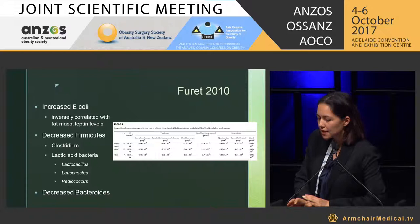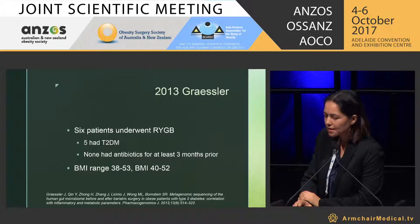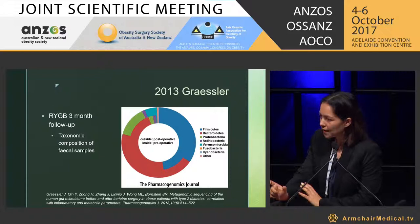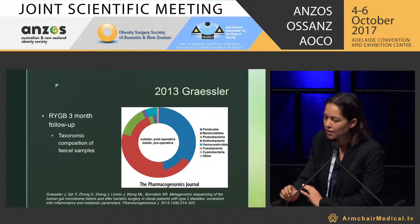In 2013, Dr. Graesler looked at six patients who underwent Roux-en-Y gastric bypass. The inside circle of the chart is the preoperative bacterial abundance and the outside circle is postoperative. Again, we had this mirroring in the changes for firmicutes, Bacteroides, and proteobacteria. I found that relatively exciting.